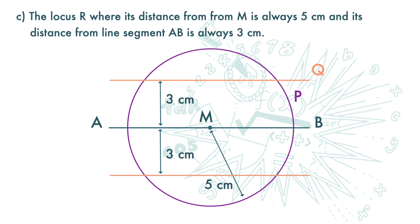Part C: the locus R where its distance from M is always 5 centimeters and its distance from line segment AB is always 3 centimeters. The locus satisfying these two conditions can be found from the diagram. These intersections — 1, 2, 3, 4 — are points that satisfy both conditions. These are the points of locus R, which are 5 centimeters from M and 3 centimeters from line segment AB.